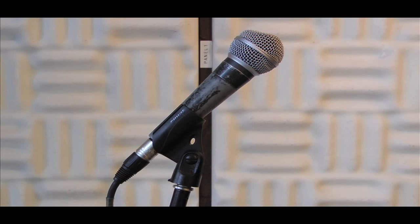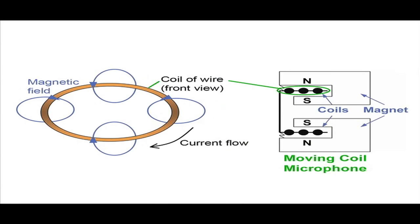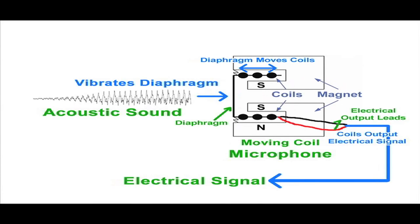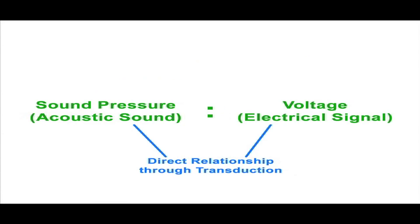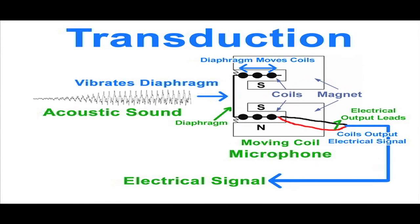But how do microphones and speakers actually translate these types of energy, or transduce? Let's dissect one basic type of microphone — moving coil — and find out. Beneath the capsule cover, we can see the diaphragm. Acoustic energy first hits this part of the microphone, and this energy vibrates the diaphragm. The diaphragm is attached to two coils of wire, each of which sits suspended in a magnetic field. When the diaphragm vibrates, the coils move within the field. This movement disrupts the magnetic field, generating a signal whose voltage is directly related to the level of sound pressure hitting the microphone. This is how a moving coil microphone transduces.